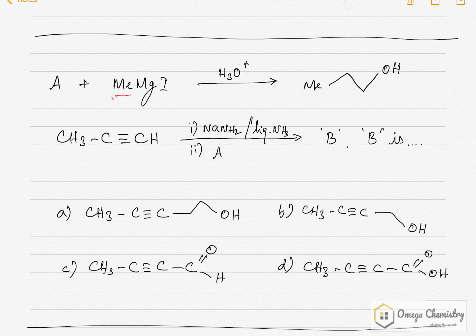So, A must be ethylene epoxide. Now, I understand that sodamide is a very strong base. So, it would have removed this hydrogen and subsequent generation of this species.